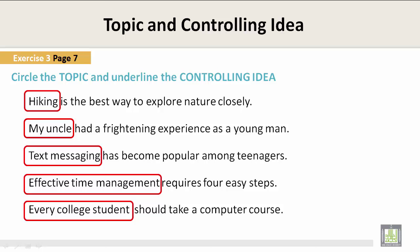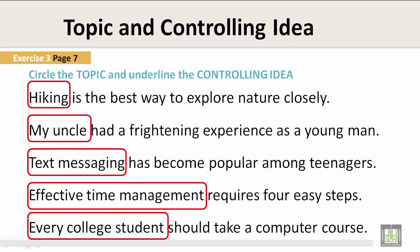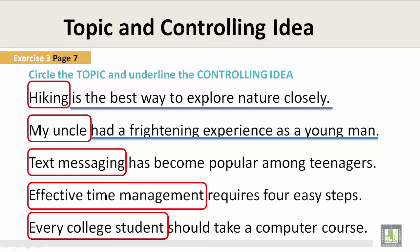Remember, the circled word or words in red is the topic. Now let's take a look at the controlling idea. "Hiking is the best way to explore nature closely" — the controlling idea is "is the best way to explore nature closely." "My uncle had a frightening experience as a young man" — the controlling idea is "had a frightening experience as a young man." "Text messaging has become popular among teenagers" — the controlling idea is "has become popular among teenagers."